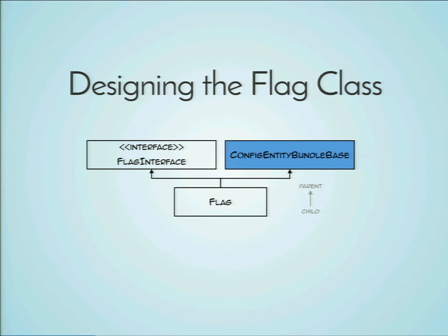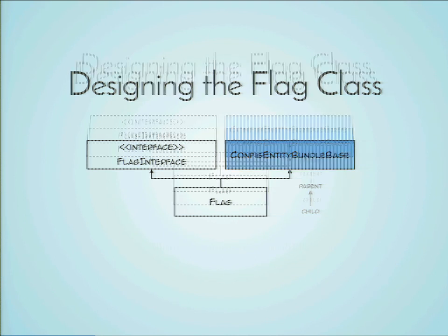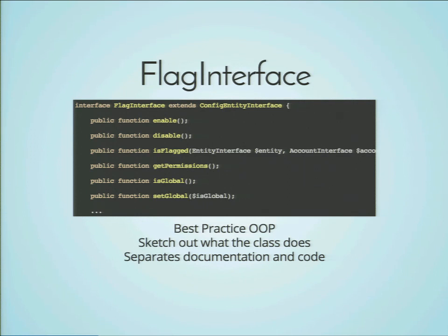We also derive from a Drupal-provided class called ConfigEntityBundleBase, and that does all of the Drupal work for us. The interface is that contract — it tells you what the module is supposed to do. It does not contain any state or method bodies; it just contains the method names and signatures. This is also a wonderful place to document your code, because you can keep all your documentation in the interface class. Then when you have your real code, all you have to do is use an inheritdoc in each method, and you no longer need a huge doc block in your class.